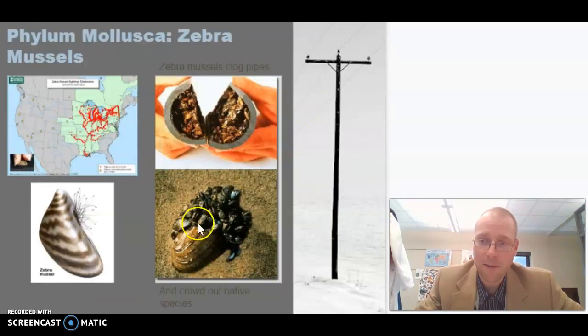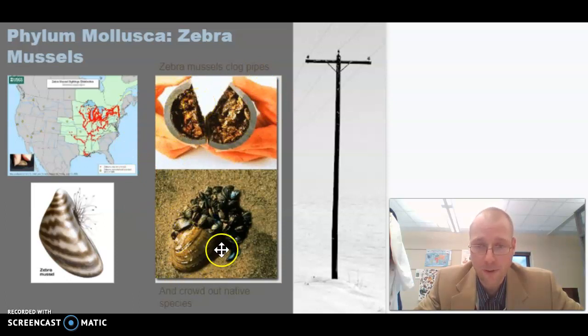Another mollusk that we have in Michigan that does not belong here are the zebra mussels. Zebra mussels are originally from Europe and Asia. They came over in boats, and now they are spreading. The biggest issue with them is that they plug pipes. Well, that's the biggest economic issue. Another issue they do is they actually grow on top of our native mussels and clams and prevent them from feeding, prevent them from moving, and basically kill them.